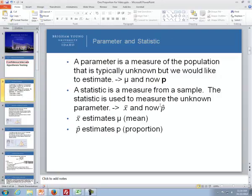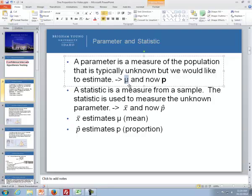But before we do that, let's talk about the difference between a parameter and a statistic. A parameter is a measure of the population that is typically unknown, but we'd like to estimate. For instance, the population mean is a parameter that we covered in unit 2. Now what we'll be covering in this unit is the population proportion. On the other hand, a statistic is a measure from the sample, and the statistic is used to measure the unknown parameter. For instance, our sample mean, x bar, is used to estimate our population mean, and our sample proportion, which is p-hat, is used to estimate the population proportion, which is p.